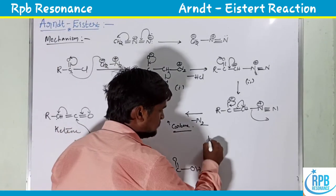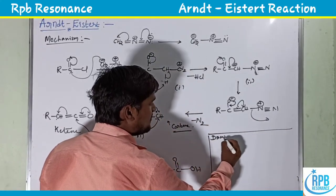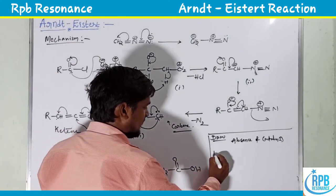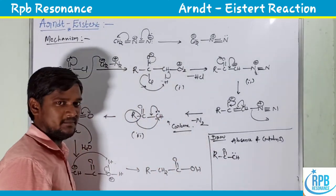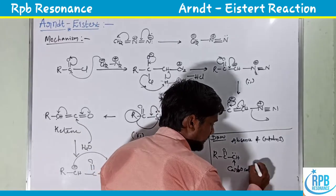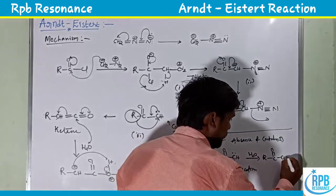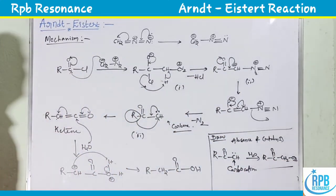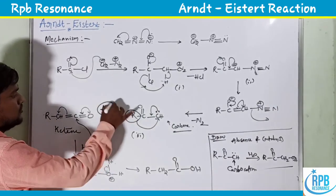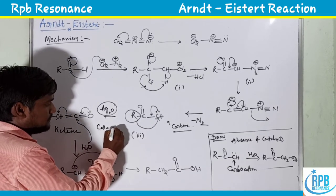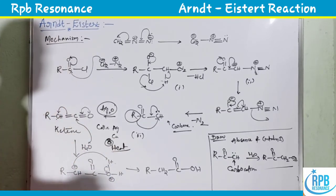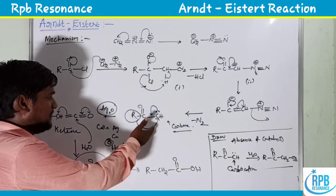A drawback: in the absence of catalyst, the acyl carbene intermediate acts as a carbocation. In the presence of a nucleophile, it converts to R-CO-CH₂OH — an alcohol-type product. That is why Ag₂O catalyst must be used. Alternatives include colloidal silver, colloidal copper, colloidal platinum, or sometimes heating is also used.